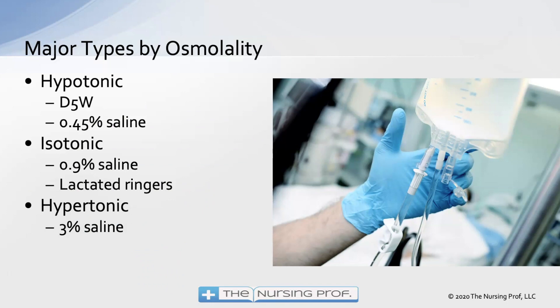Let's talk about IV fluids and how we classify them based upon osmolality. We have hypotonic fluids, isotonic fluids, and hypertonic fluids. Hypotonic fluids include D5W and 0.45 saline — half normal saline. Isotonic fluids include normal saline (0.9%) and lactated Ringer's. Hypertonic fluids include 3% saline and combinations of lactated Ringer's or saline with D5.